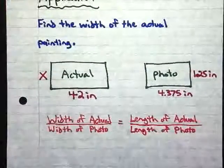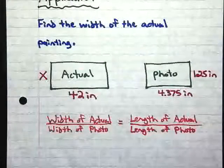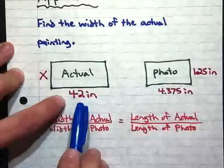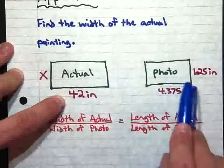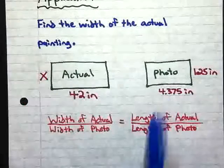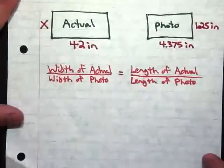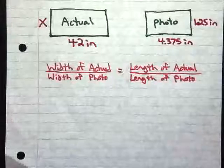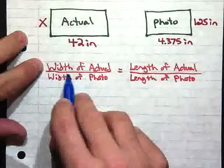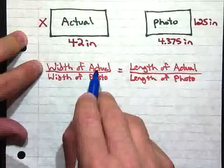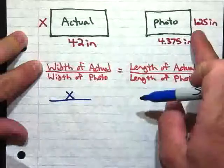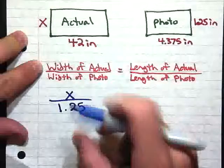And our problem here is we want to find the width of the actual painting. Now, you can see here that we have our actual painting. Our width is X and the length is 42 inches. And then we have a photo of the painting, which is a width of 1.25 inches and a length of 4.375 inches. So I wrote you guys a little proportion here so you can see how you would plug things in and see how the corresponding parts relate to each other. So in our first ratio, we have the width of the actual painting. And our width is going to be X. So we have X over the width of the photo, which is 1.25 inches.